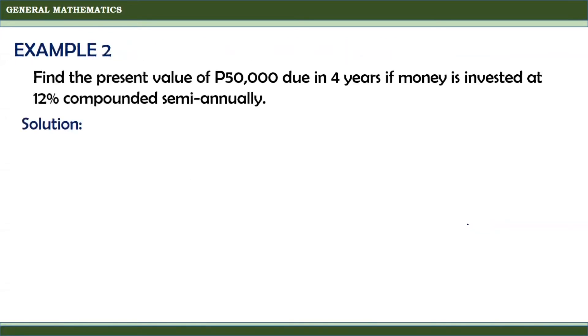Let us take this example: Find the present value of 50,000 due in 4 years if money is invested at 12% compounded semi-annually.